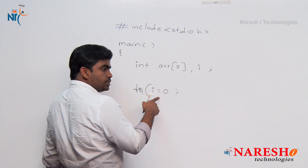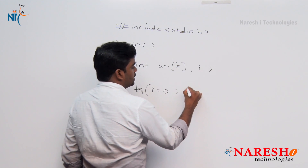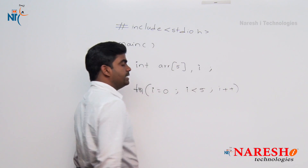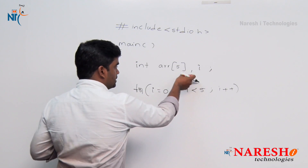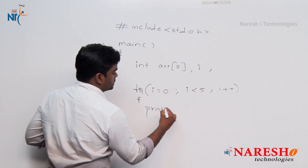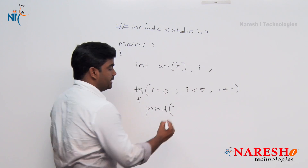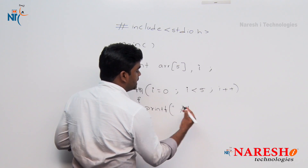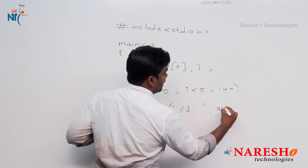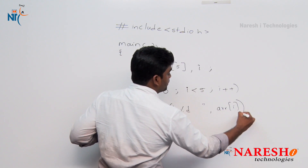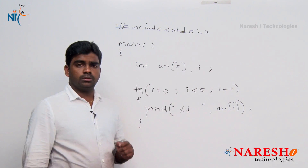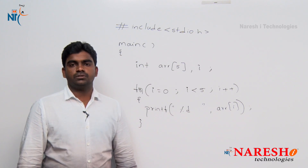Index number starts with 0 and here it is less than 5, i plus plus — less than the size. How to print? Directly we are giving locations. printf with percentage d and then arr of i — arr of 0, arr of 1, 2, 3, 4. So like that it will print.